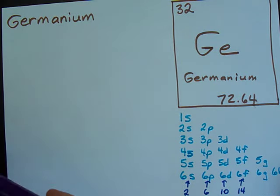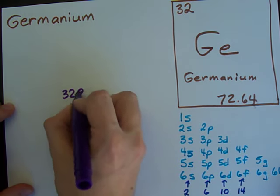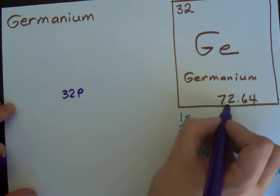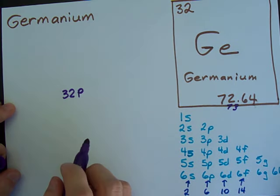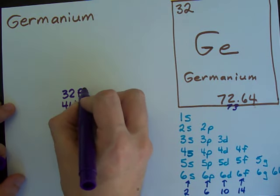Now, you always start Bohr-Rutherford diagrams the same way, with the number of protons in the center and the number of neutrons in the center. I'm going to assume that this is about 73, or we'll use the isotope that has an atomic mass of 73, which means we have 41 neutrons.